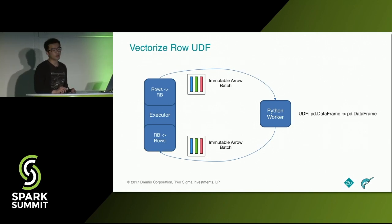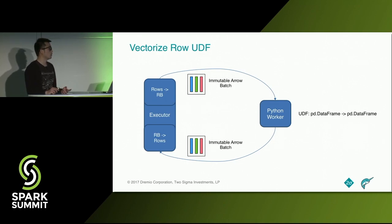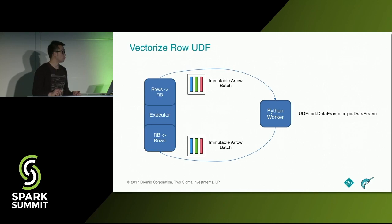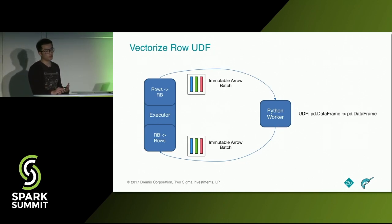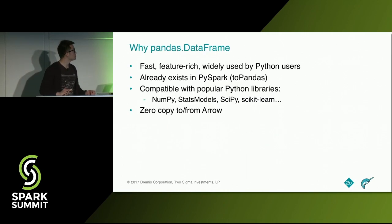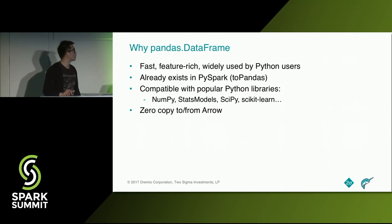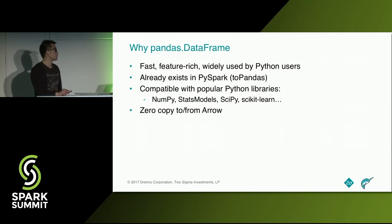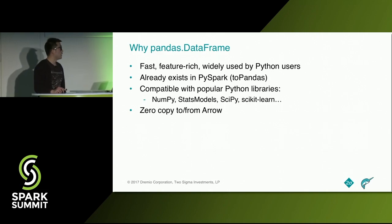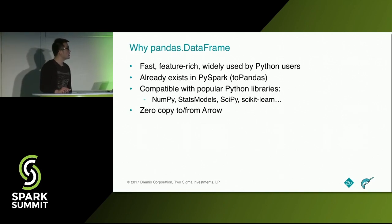Here are changes we made to PySpark to vectorize the row UDF. We implemented a module to convert Spark rows to and from Arrow record batches, and we send Arrow record batches across the wire to the Python worker. Upon receiving that data, the Python worker now uses a UDF function which is a transform on a Pandas DataFrame to enable vectorized operations. We picked Pandas DataFrame as the interface because it's a fast, feature-rich library widely used by Python users. It already exists in PySpark via the toPandas function, it's compatible with popular libraries like NumPy and StatsModel, and critically, Pandas supports zero-copy to and from the Arrow data structure.